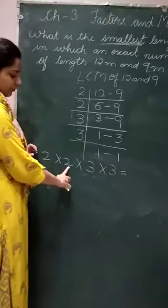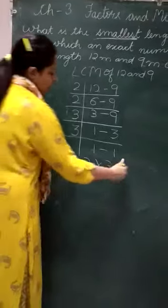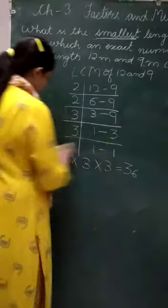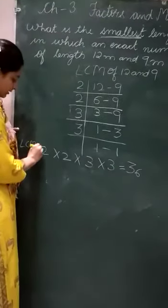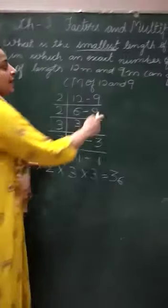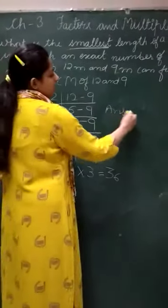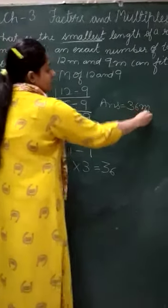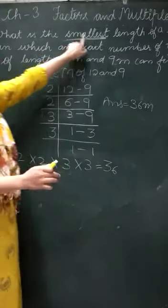Now 2 times 2 is 4, 4 times 3 is 12, 12 times 3 is 36. We have got the LCM 36. That means our answer is 36 meter.